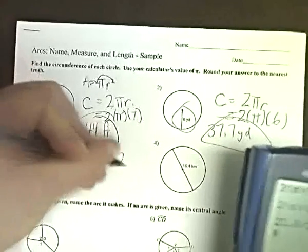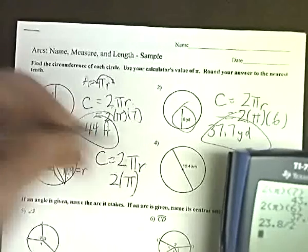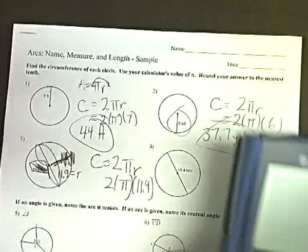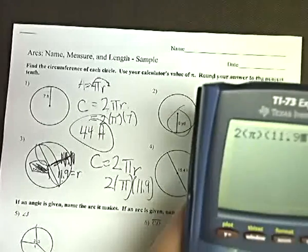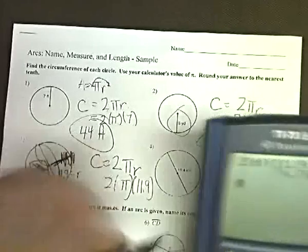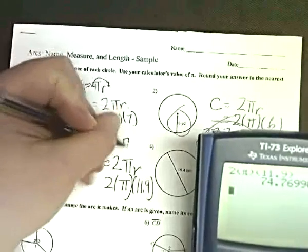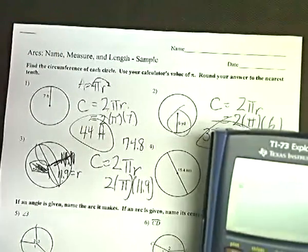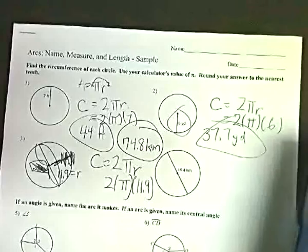Then it's just punch it back into the formula, which you could do probably in your sleep by now, I would hope, but maybe not. 2 pi, 11.9. Again, the 6 knocks the 7 up, so it would be 74.8, probably kilometers. It's tough to tell because I've marked through it, but kilometers, I'm guessing.